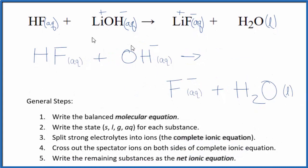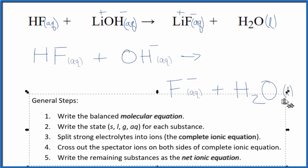So this is the balanced net ionic equation for HF plus LiOH. You'll notice that we have two hydrogens here, two hydrogens here, one oxygen, one oxygen, and then one fluorine and one fluorine. So it's balanced, plus the charge is conserved. We have a negative charge on this side and just one negative charge on this side.